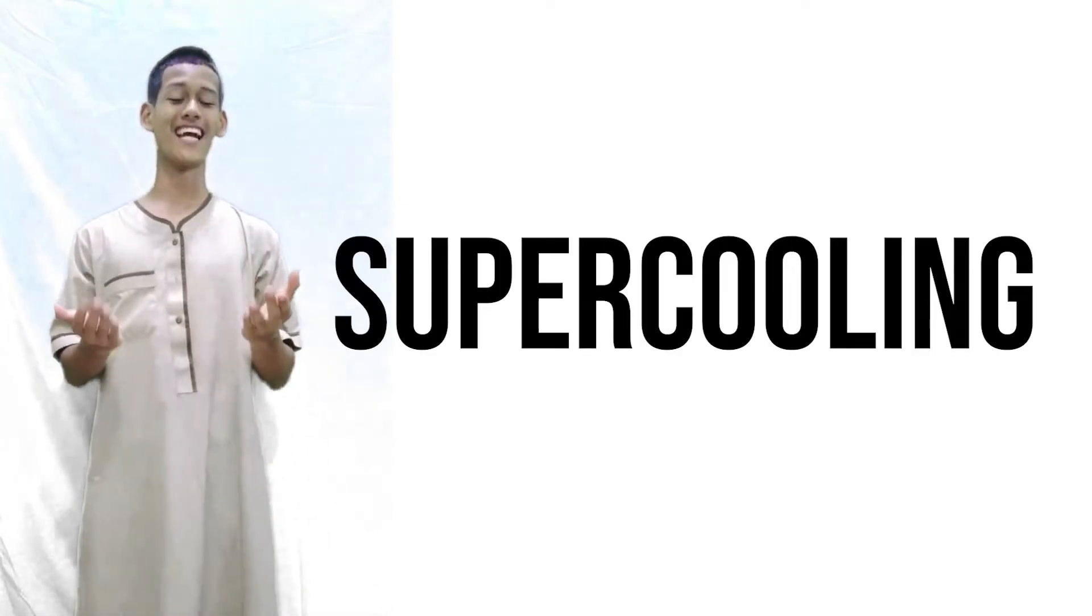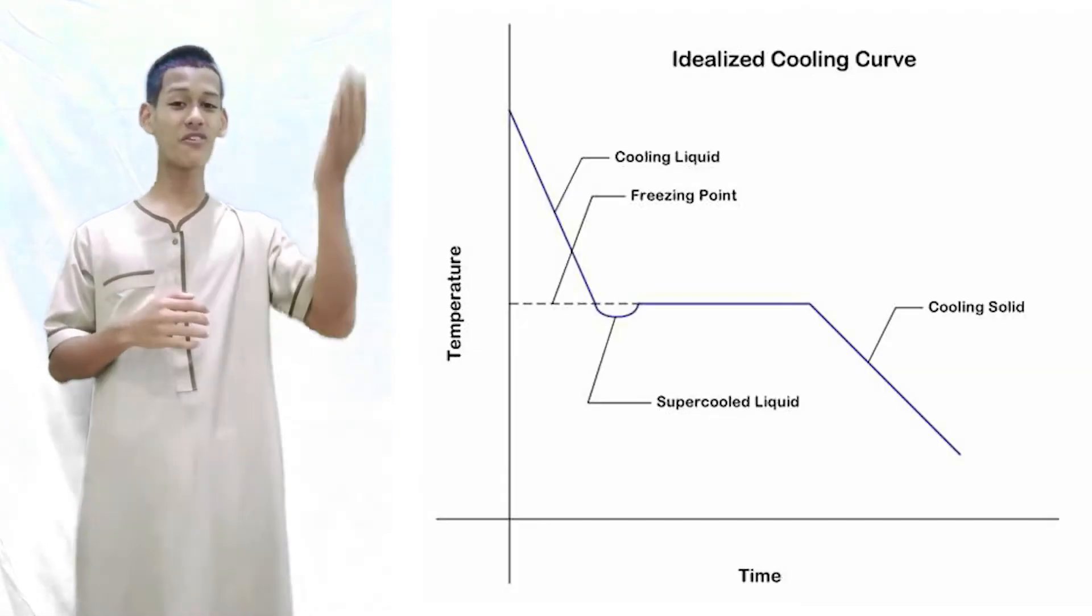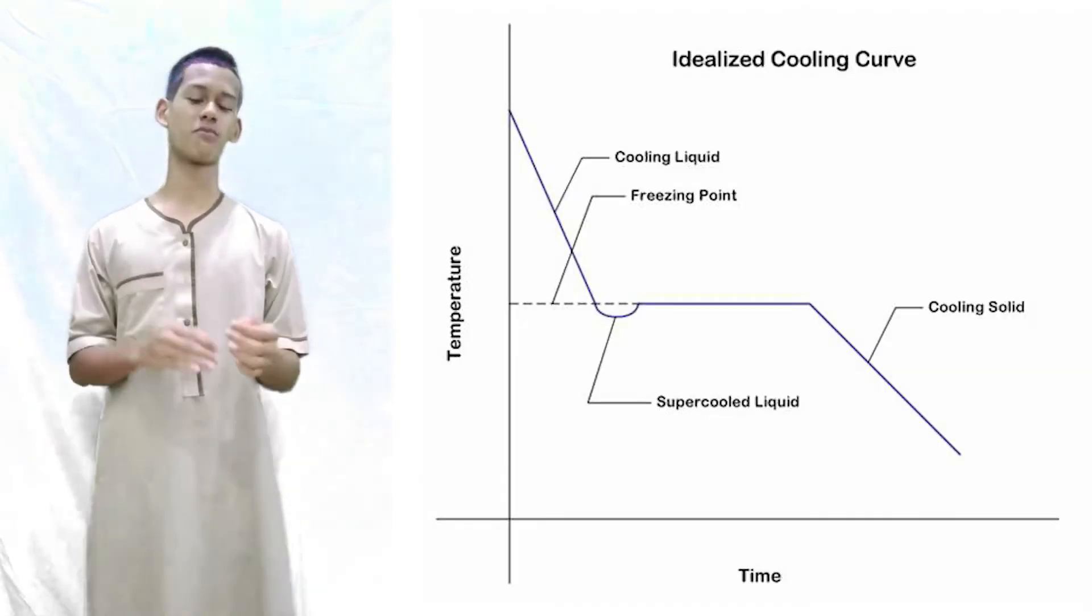We all know that water has a freezing point of 0 degree Celsius. However, did you know that water doesn't always freeze when it's supposed to? This is because liquids are subject to a phenomenon known as supercooling. In a supercooled state, a liquid remains a liquid even when it's below its freezing point.